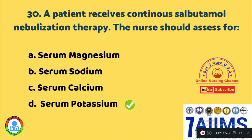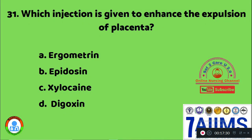Question 31: Which injection is given to enhance the expulsion of the placenta? Option A: ergometrine. Option B: epidocin. Option C: xylocaine. Option D: digoxin. For expulsion of the placenta, the drug given is ergometrine, Option A.